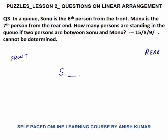How many persons are standing in the queue if two persons are between Sonu and Monu? Sonu could be here with two persons in between and then Monu, or it could be vice versa — Monu first, two persons in between, then Sonu. These are the only two possibilities.